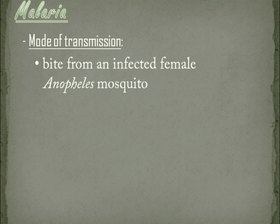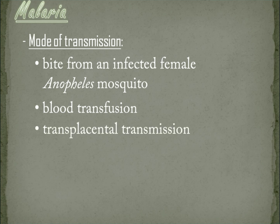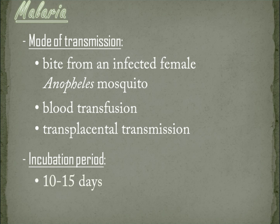Mode of transmission. It is when you are bitten by an infected female Anopheles mosquito. Since the parasites can be found in the red blood cells of an infected person, malaria can also be transmitted through blood transfusion. Malaria may also be transmitted from a mother to an unborn infant before or during delivery. Incubation period. According to WHO, malaria is an acute febrile illness. In a non-immune individual, symptoms usually appear 10 to 15 days after the infected mosquito bite.